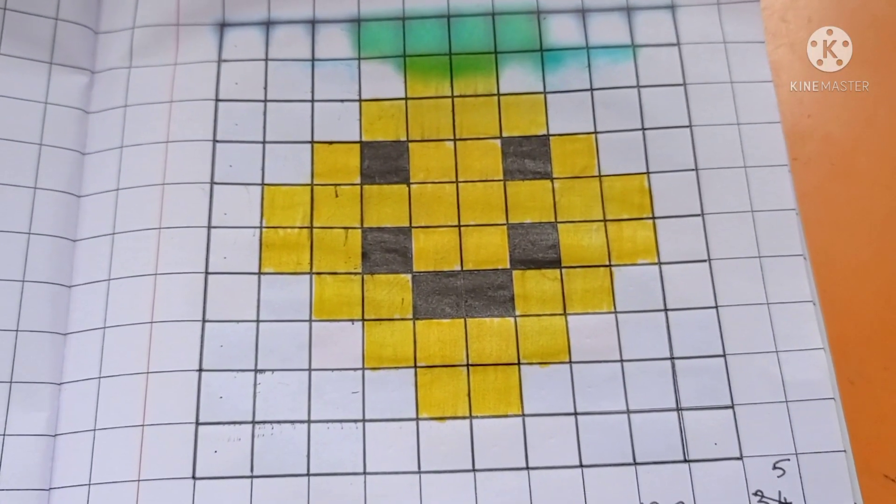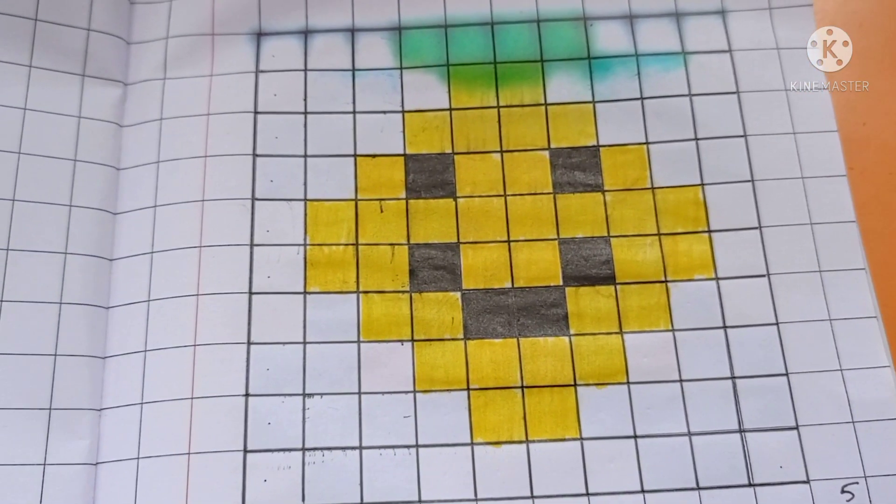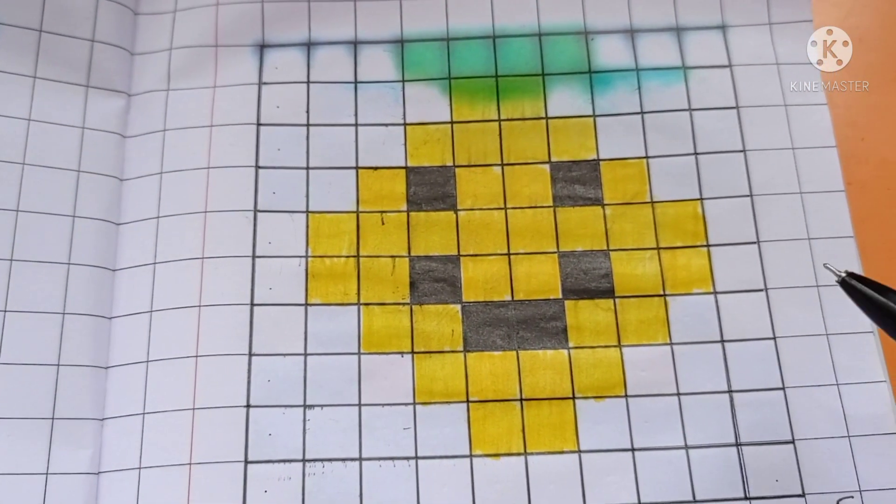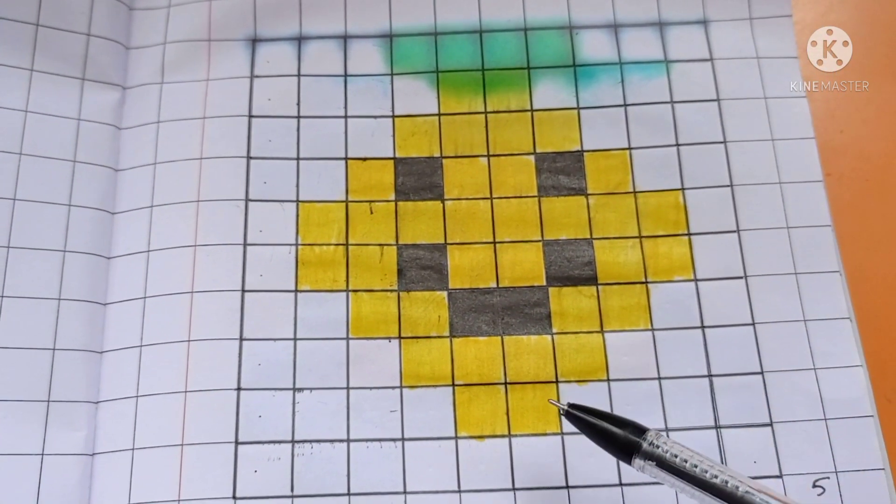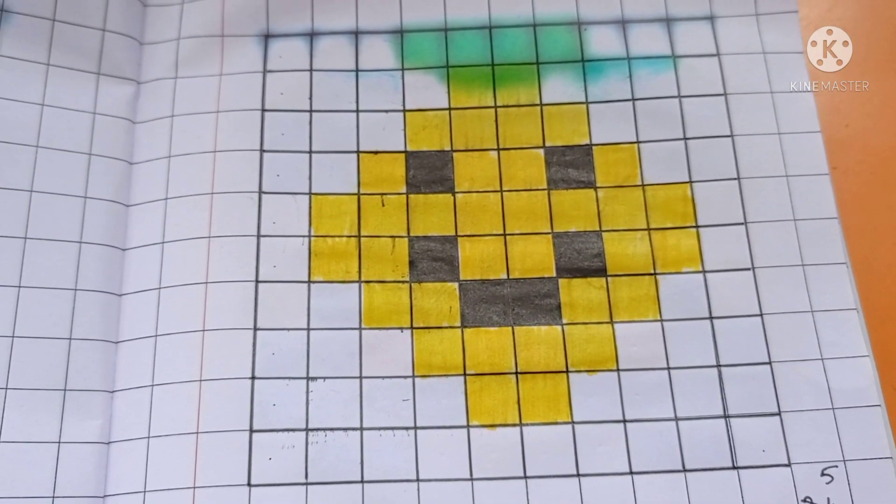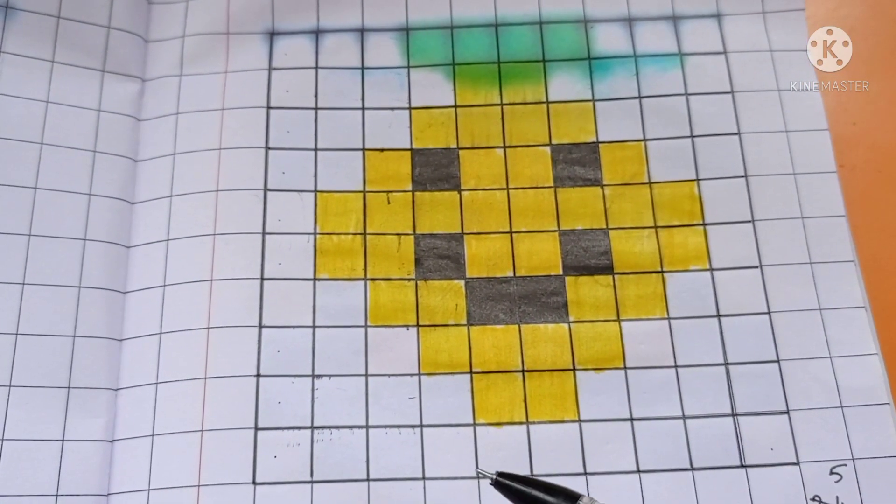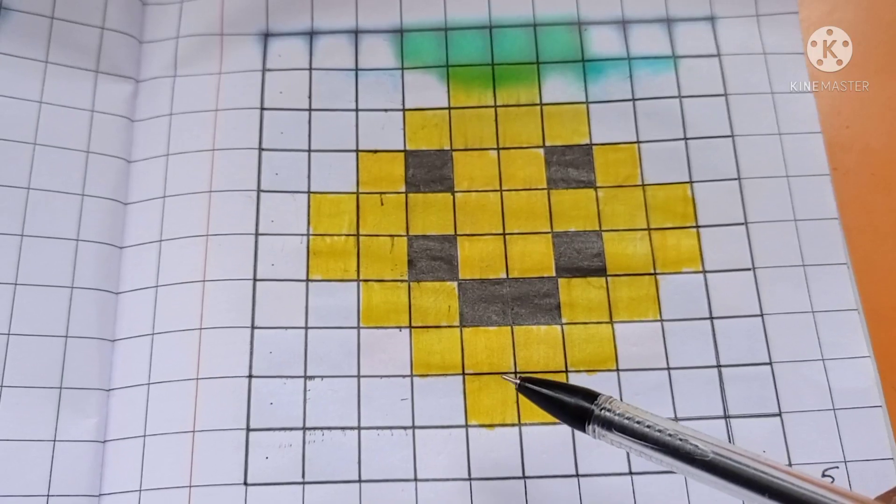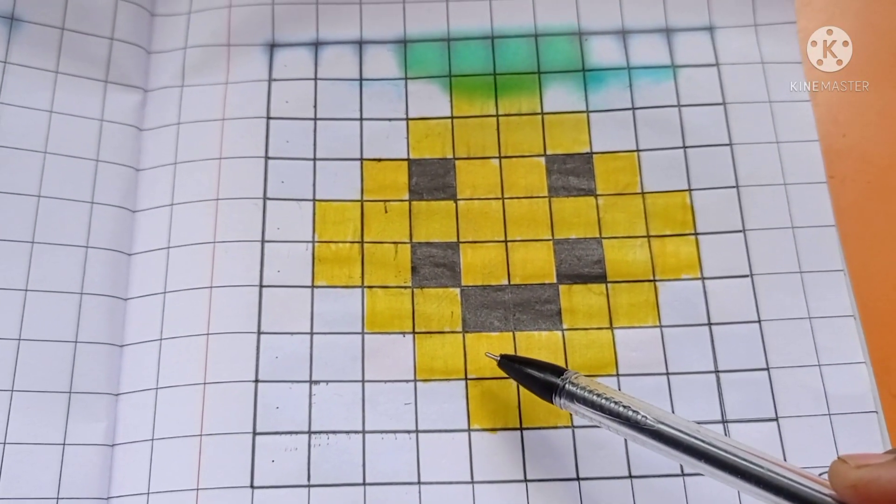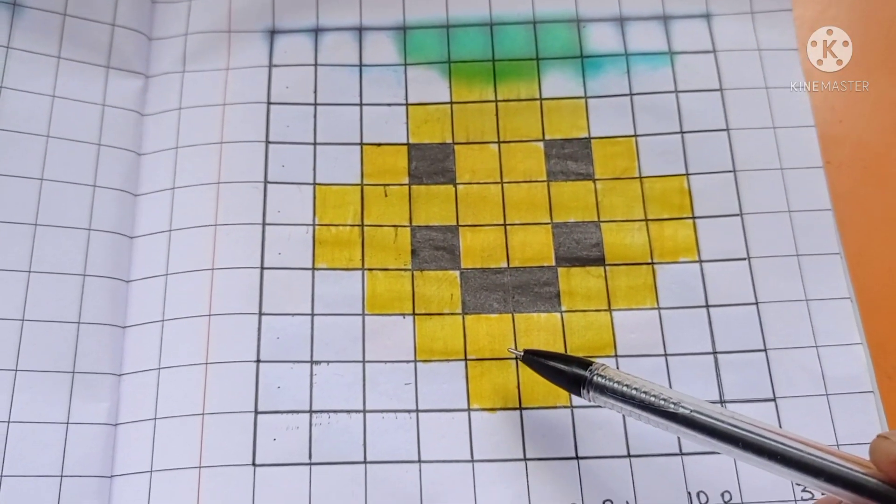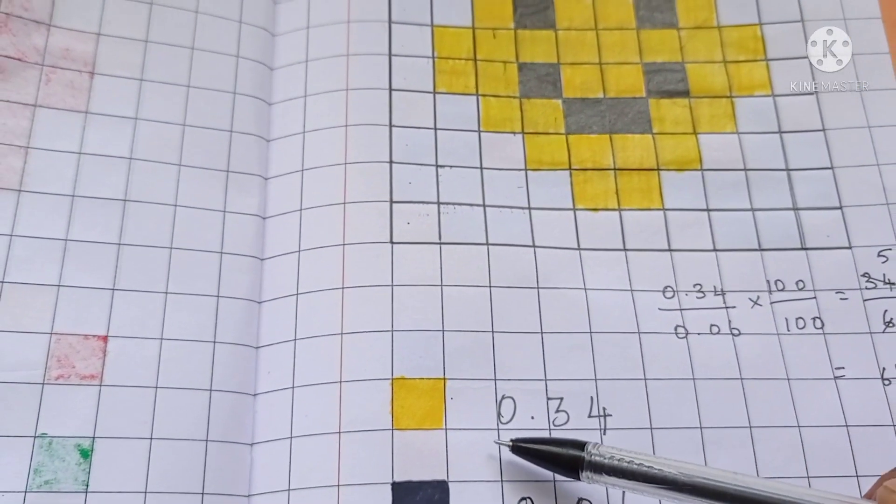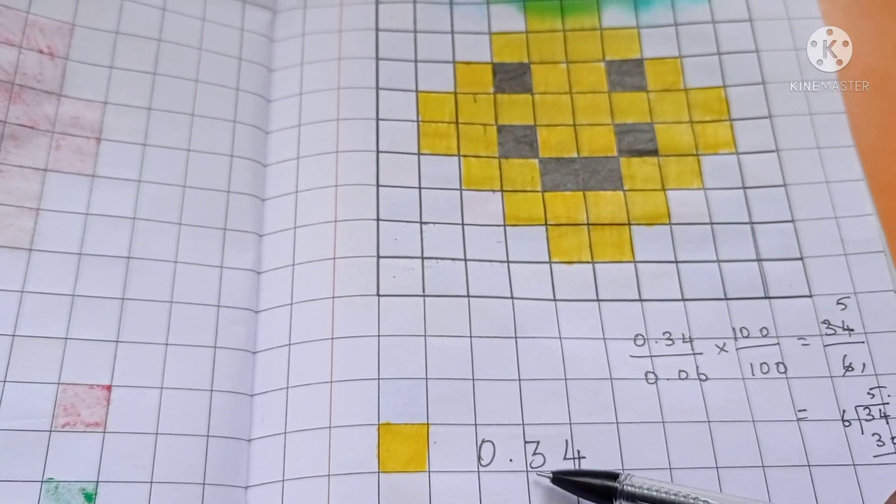Let's do division operation in decimal. Write the decimal number for color yellow. The whole thing is divided into 100 parts. How many parts are colored in yellow? 0.34.